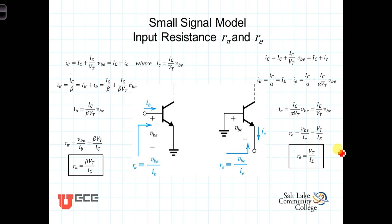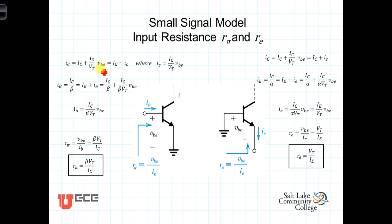We've already done the transconductance and also derived the small signal approximation. And in that derivation in the last video, using a linearization of the exponential function, we determined that the complete I sub C consisted of a DC component, or the bias component, plus a small signal component. We found that i sub c, the small signal component in the collector current, was equal to I sub C over V sub T times v_BE, where I sub C is defined as that.